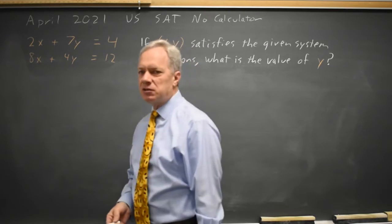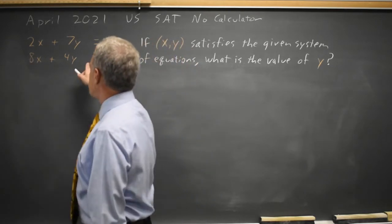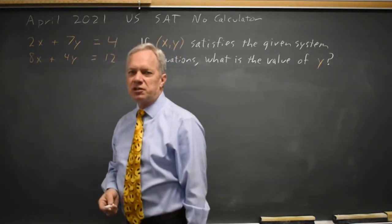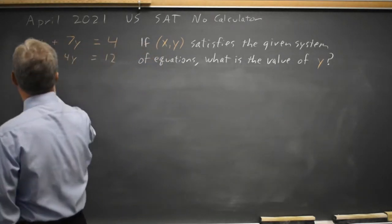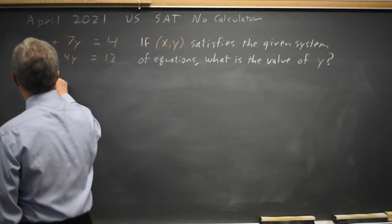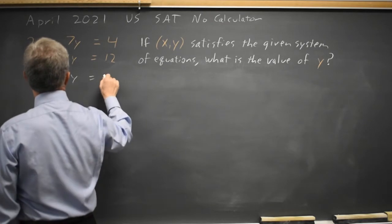If we notice that the second equation, all three coefficients are multiples of four, I can divide each by four and get 2x plus y equals 3.